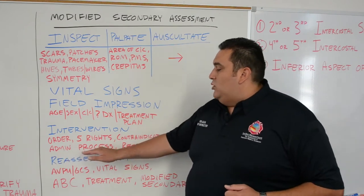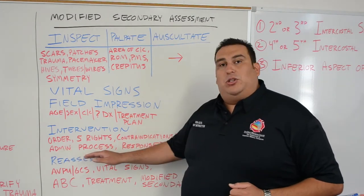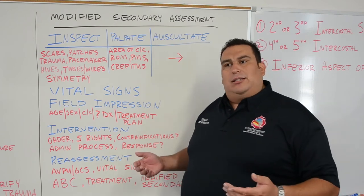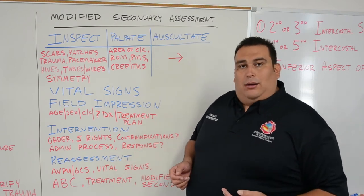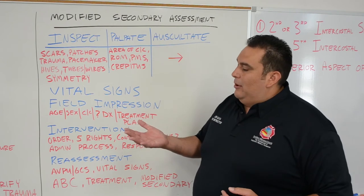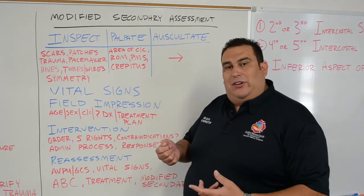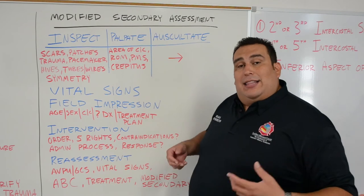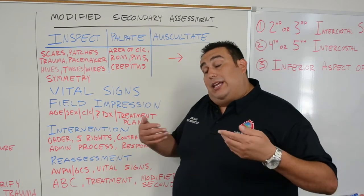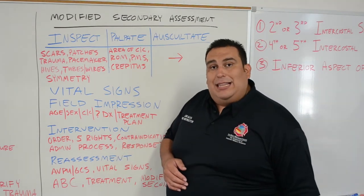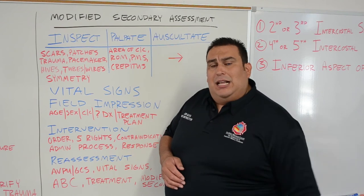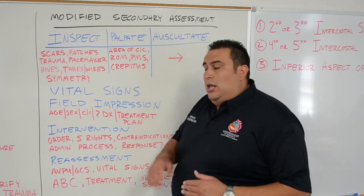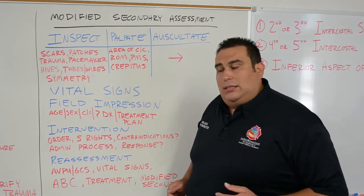With this medication, we're going to look at the administration process. A good example would be our EpiPen. We're going to grab the EpiPen, remove the safety, and remove it from its packaging. The area in which we're going to inject the EpiPen would be the mid-lateral thigh, using the vastus lateralis muscle. That would be the administration process.